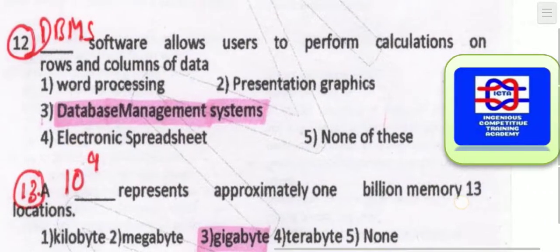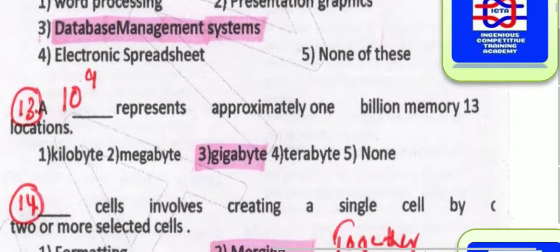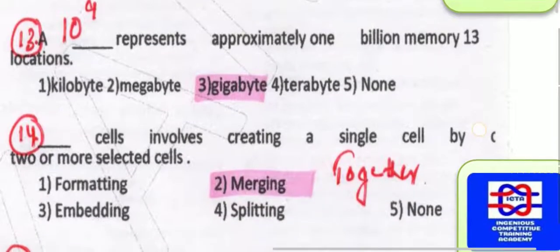DBMS — database management system. This software allows users to perform calculations on rows and columns of data. So whatever the calculations concerning rows as well as columns, that is DBMS.